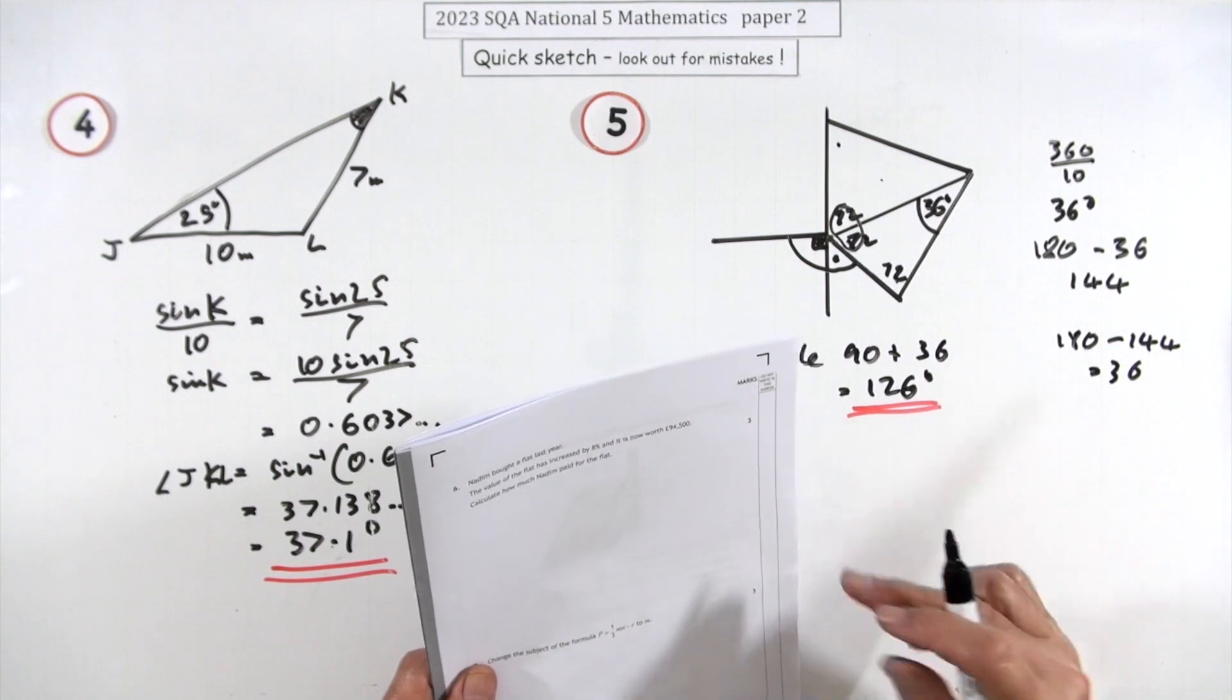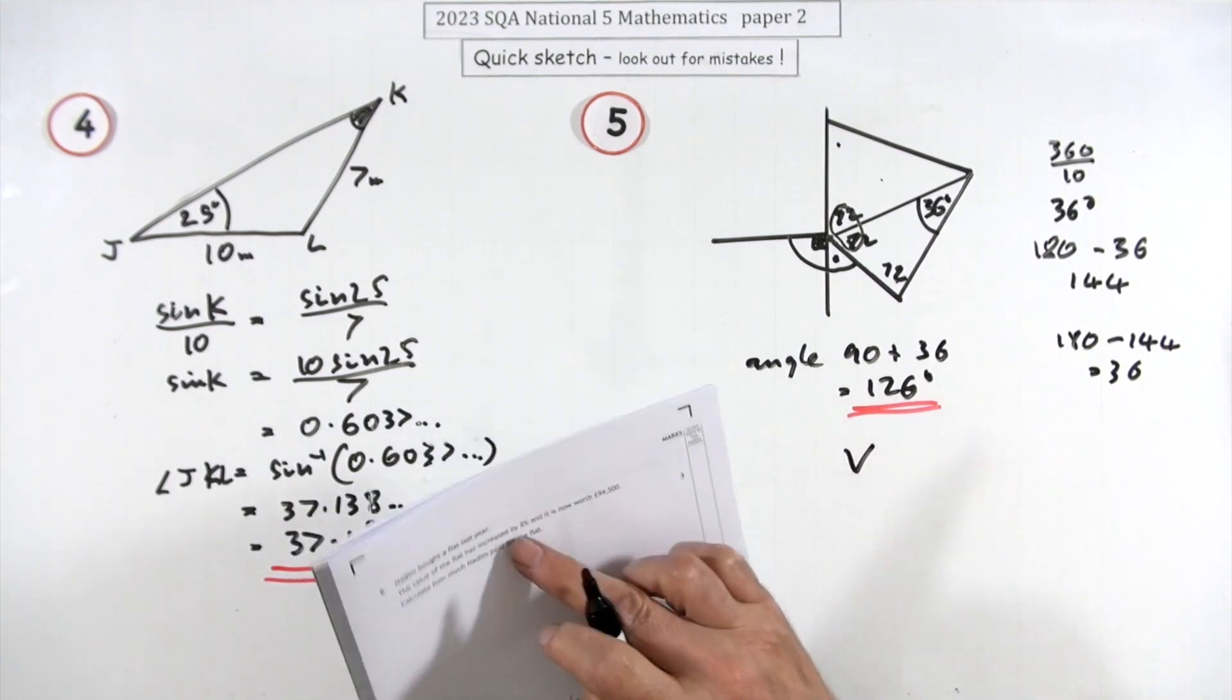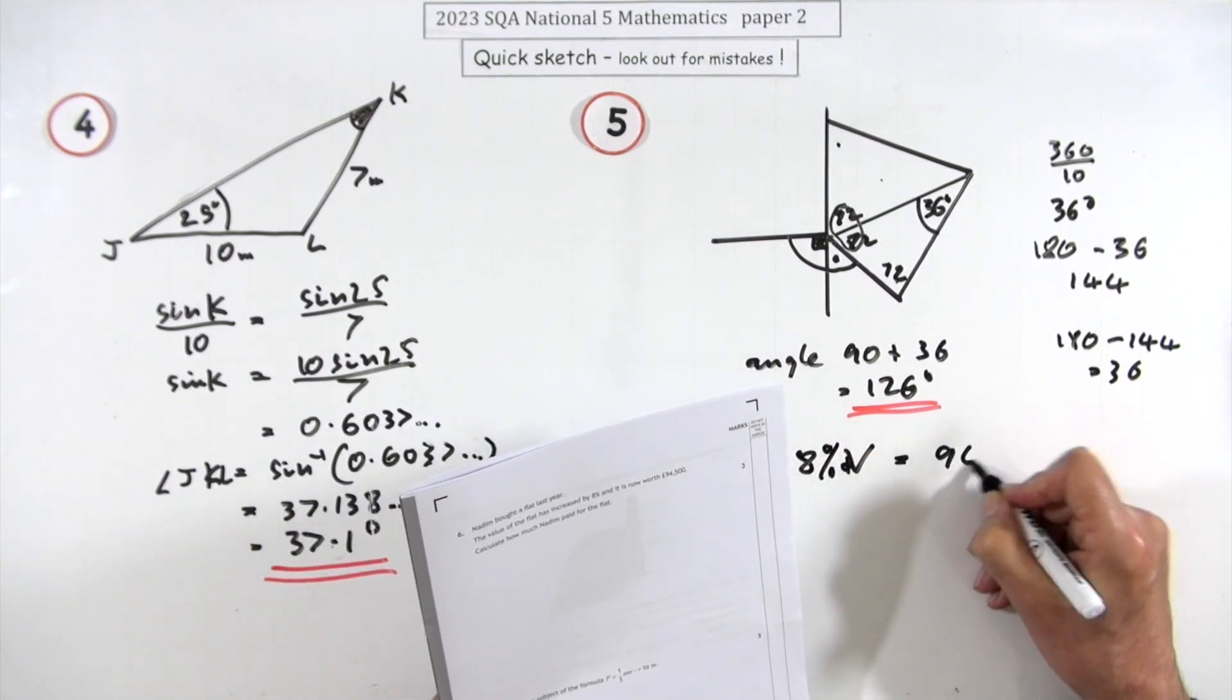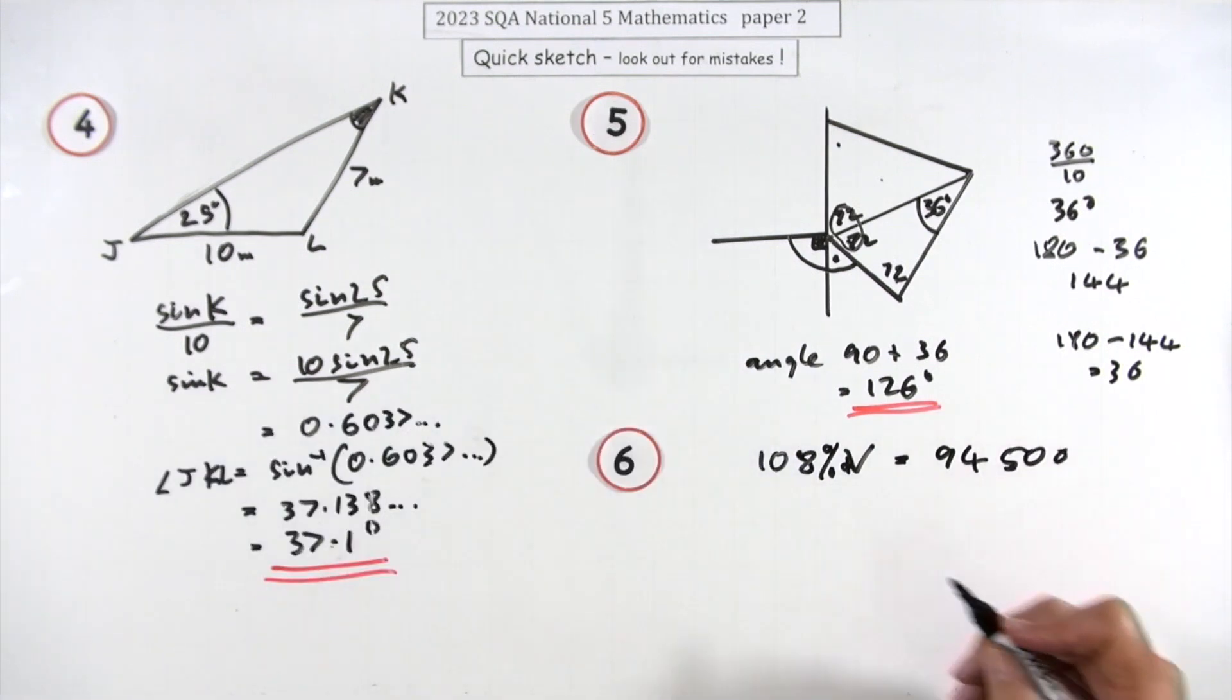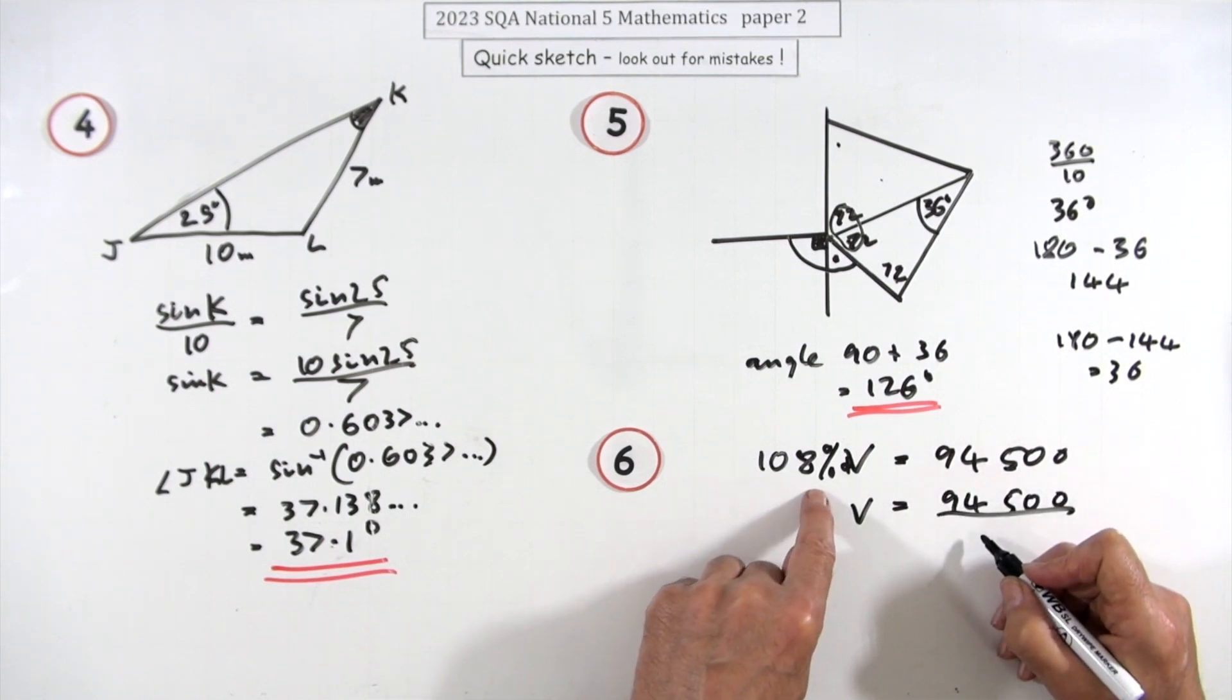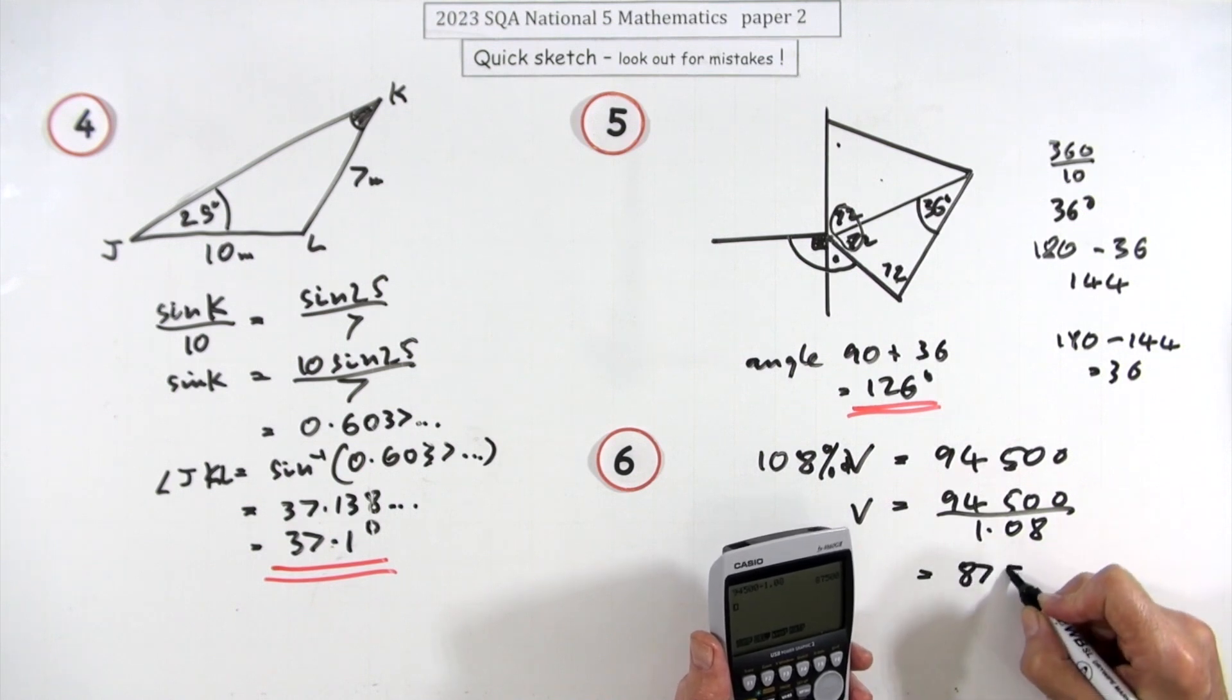Number six, a little reverse percentage here. Bought a flat for a certain value, don't know what that value is, but it increased by 8%. So that meant 108% of the value was £94,500. So what was the actual original value? Well that will just be 94,500 divided by that. And of course 108 written as a decimal is 1.08. That gives you £87,500.